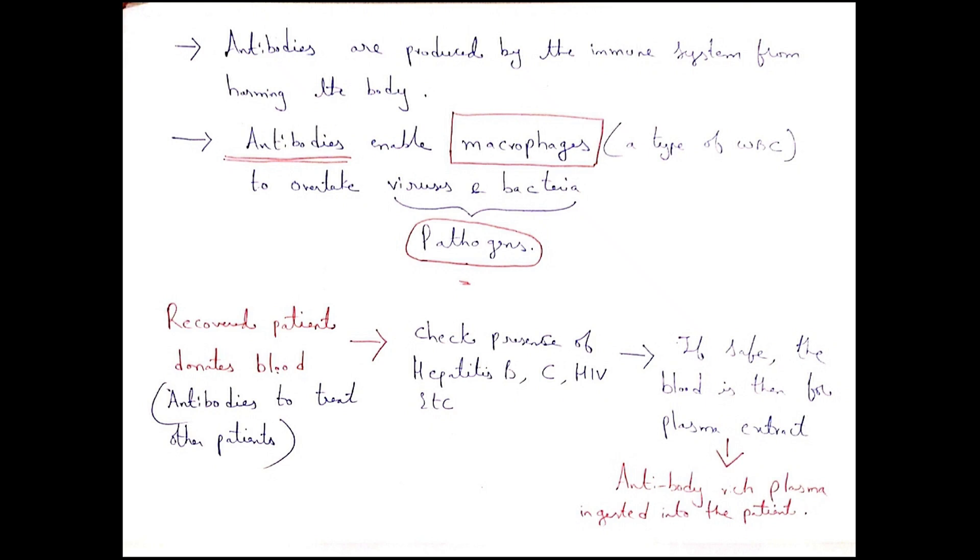So with the help of plasma therapy, a recovered person donates the blood. In that blood, antibodies are produced. The concerned authority will check for hepatitis B, C, or HIV, etc.